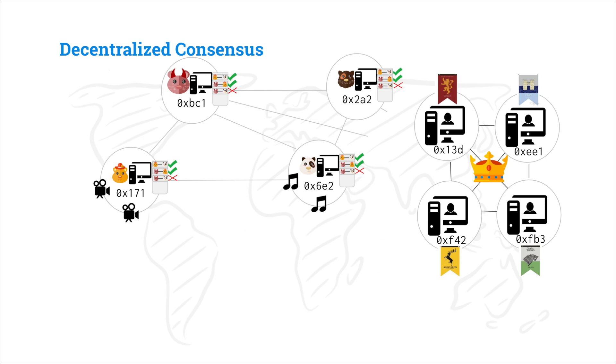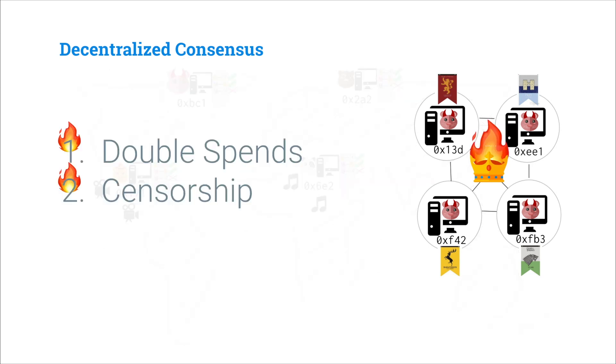Now, even if we have a network with multiple authority nodes, they can still become malicious, either intentionally over time by wanting to extract rent from users or being compromised by hackers who want to double spend and censor on the network. Or a political entity like a government could take control of all of the authority nodes that reside in its jurisdiction and could control which transactions or which users get to transact on the network. When enough of the authority nodes are malicious, they can double spend on the network by reverting history, and they can censor specific users.